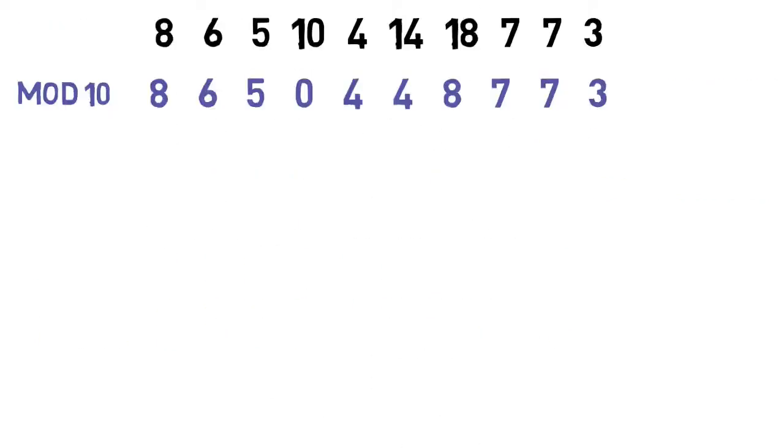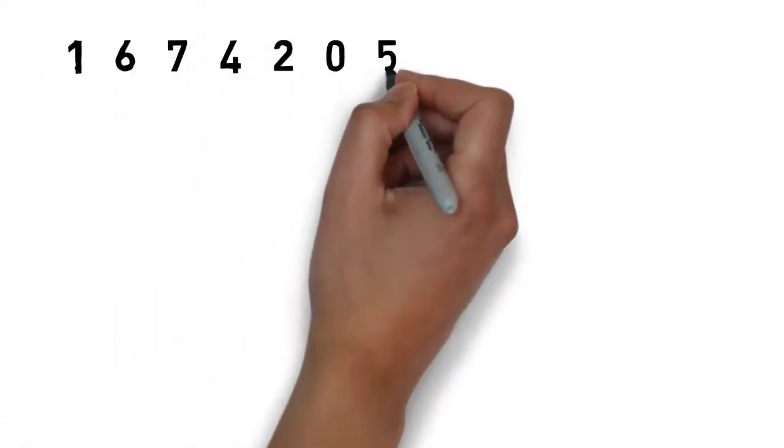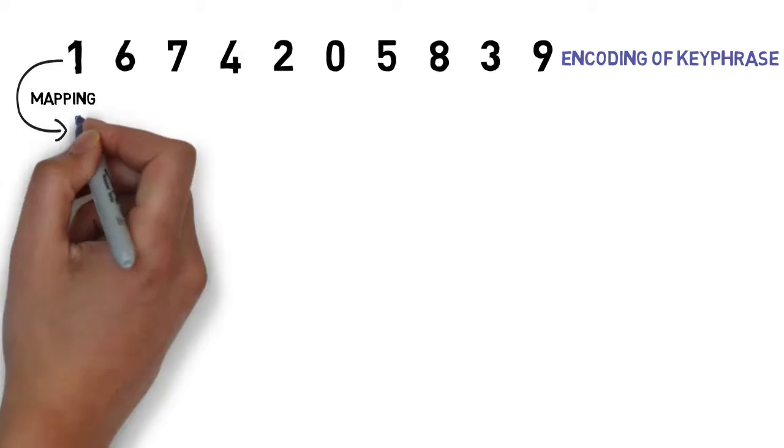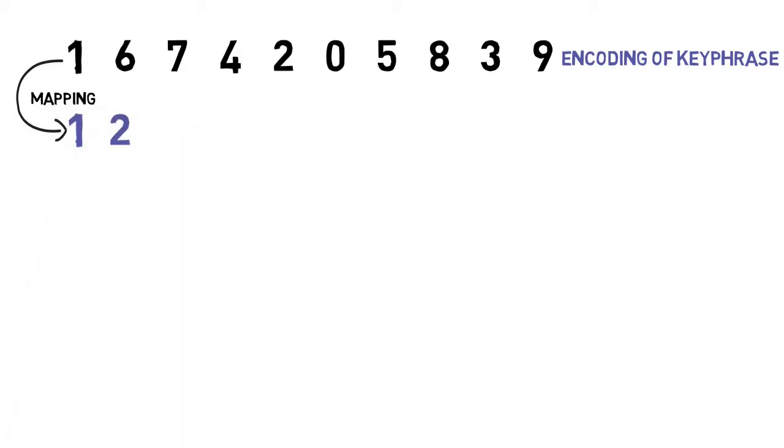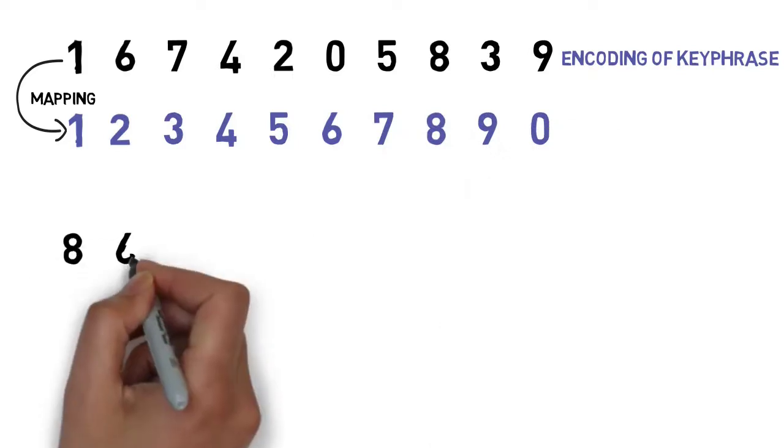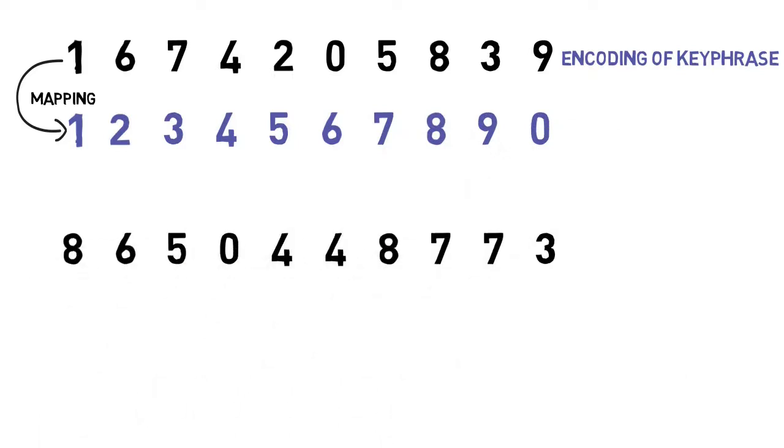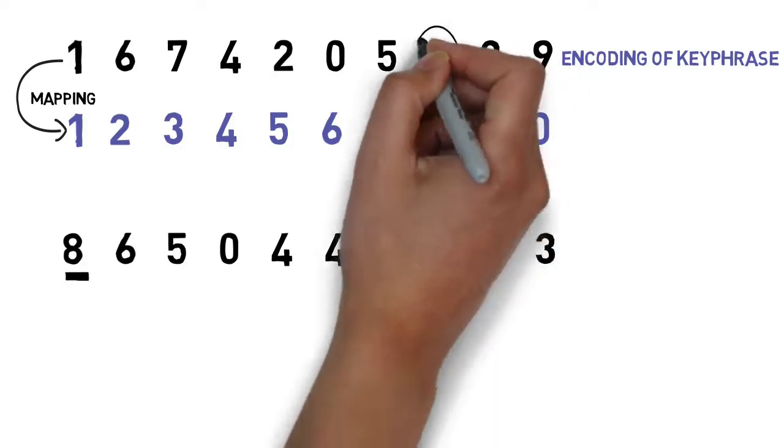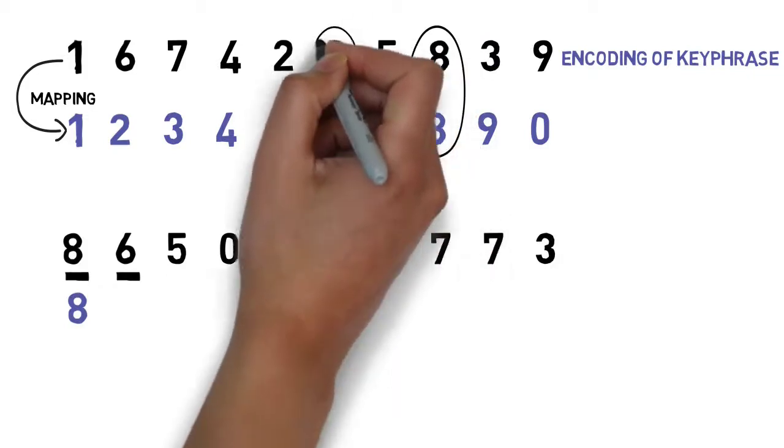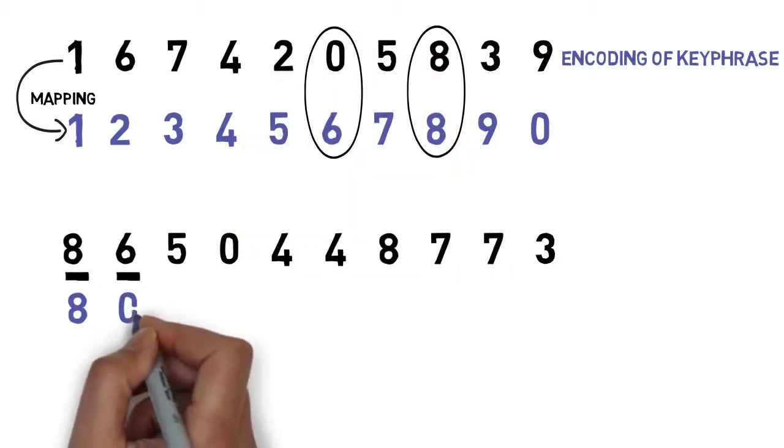To encode the sequence we just produced, first we're going to use the second half of the keyphrase. What we're gonna do is that we're gonna encode its first digit as 1, the second digit as 2, up until the 10th which will encode as 0. Using the mapping we just created, we can now encode our sequence. To encode our first digit 8, we check its mapping which is also an 8. Next, to encode the second digit 6, we check its mapping which is a 0, and so on.